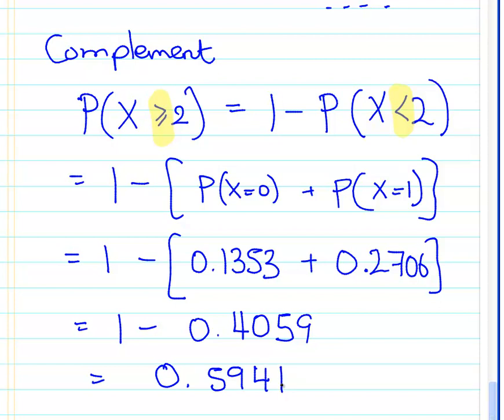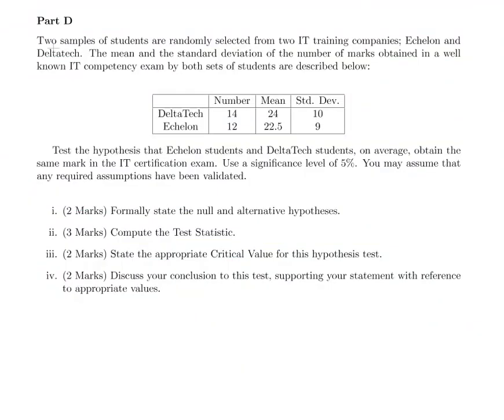So just slightly more than 59.41%. Solving in reverse order, the question was actually quite easy — just look out for that. So that's the Poisson distribution worked example.